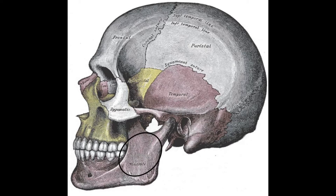This is the ramus of the mandible. It's essentially the bridge that connects the condyle and coronoid process to the angle and body of the mandible. Several muscles attach here, including parts of the temporalis, masseter, and medial pterygoid. The coronoid process is where parts of the masseter and temporalis both attach.